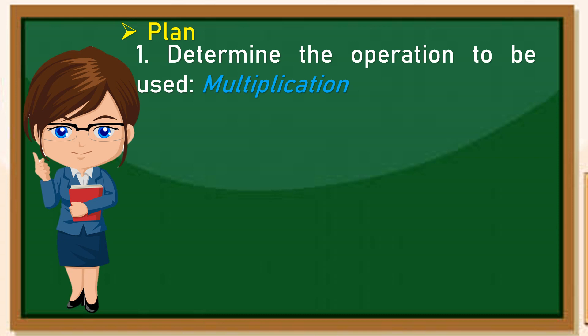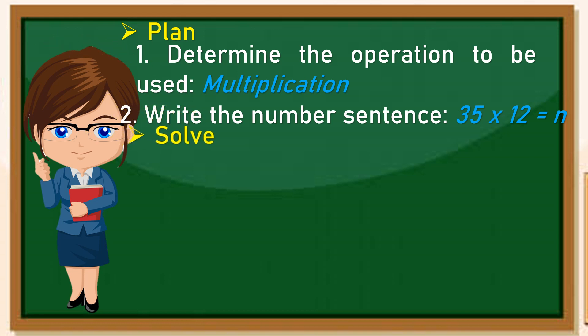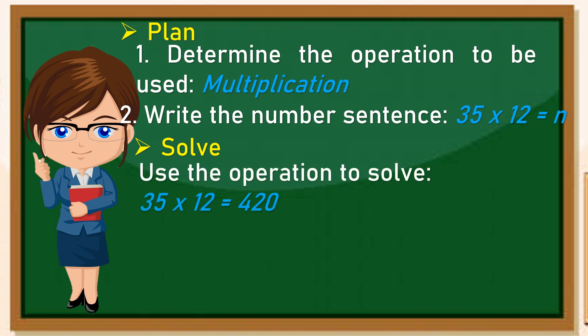Next step ay plan. First, determine the operation to be used. Ano ang gagamitin mong operation? So we have multiplication. Then write the number sentence. Saan manggagaling ito? Manggagaling ito doon sa ibinigay na facts. So we have 35 times 12 equals n.